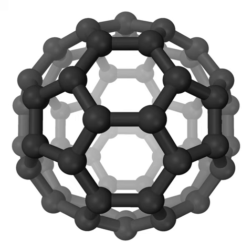Methyl formate, also called methyl methanoate, is the methyl ester of formic acid. The simplest example of an ester, it is a colorless liquid with an ethereal odor, high vapor pressure, and low surface tension. It is a precursor to many other compounds of commercial interest.